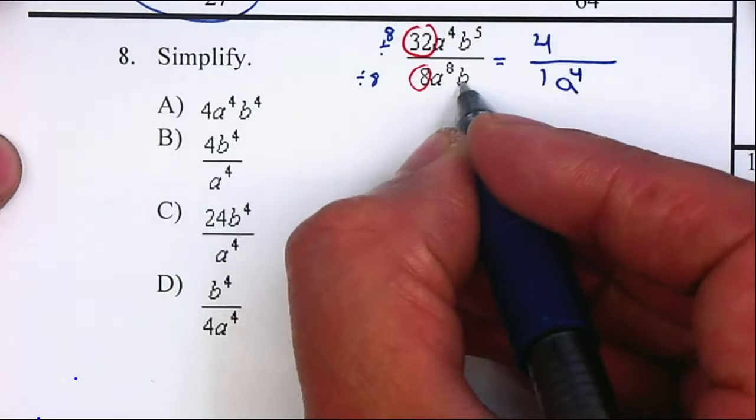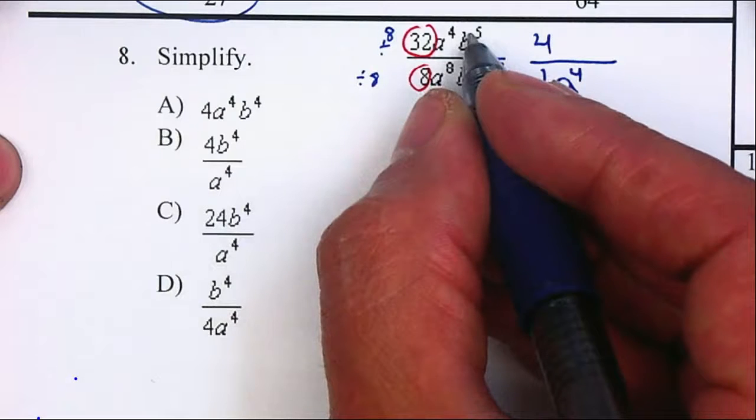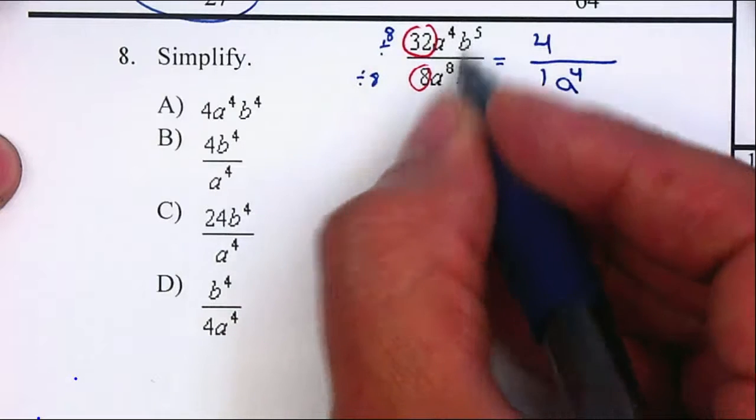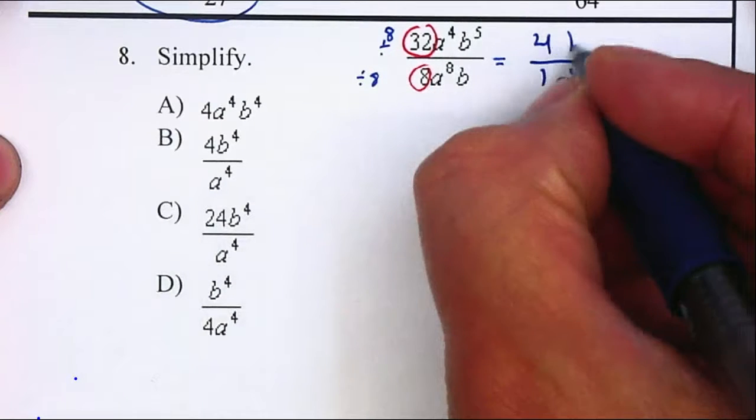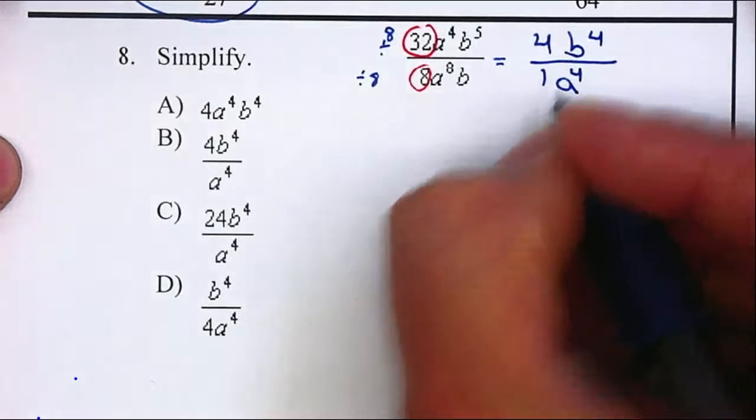B5 and B to the 1. I have 5 on the numerator, 1 on the denominator, 1 cancels. How many are left? 4 on the numerator. So therefore, your answer is letter B.